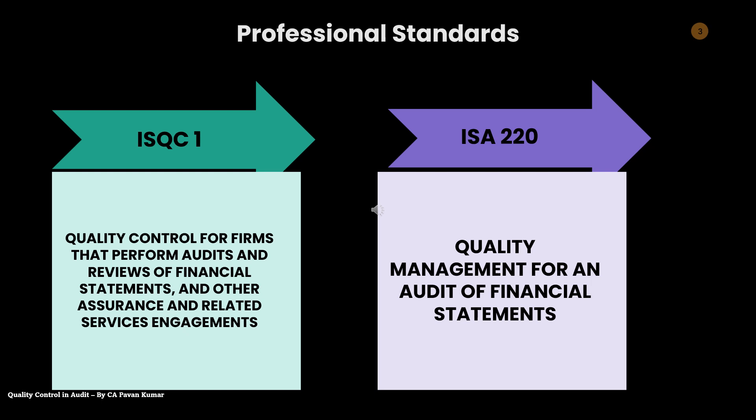ISQC 1 applies to a firm at the firm level, while ISA 220 applies to one specific engagement. For example, ISQC 1 applies to ABC and Company Chartered Accountants as a firm. ISA 220 does not apply at the firm level — it applies when ABC and Company Chartered Accountants is performing the audit of X Limited. So ISA 220 is an engagement-level standard and ISQC 1 is a firm-level standard. ISA 220 speaks about quality management for an audit of financial statements. Both standards address quality control or quality management, but the first applies universally at the firm level, and the second applies at a specific engagement level.